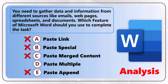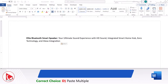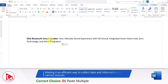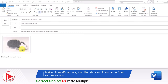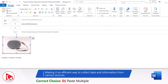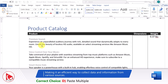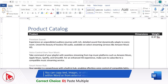Which leads us to the correct option, Choice D: Paste Multiple Items from Clipboard. This is the correct option. Paste Multiple Items allows you to paste multiple pieces of content that have been copied to the clipboard, making it an efficient way to collect data and information from various sources. Let's look at how this feature works in detail. For example, you might be working on a Product Catalog where information is located in different sources, like a Word document or an email message.